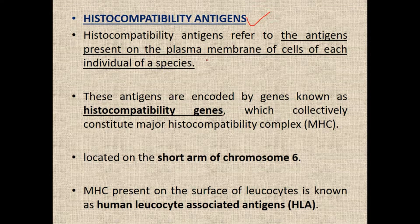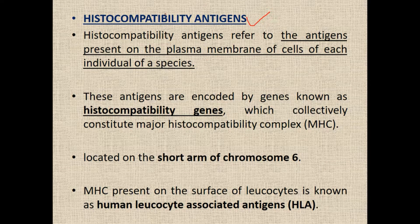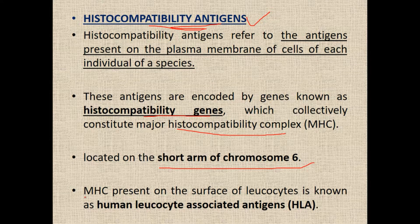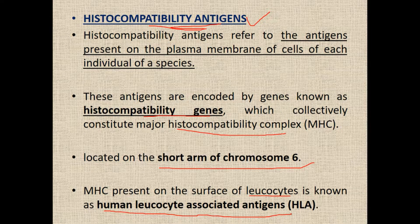Inside every species there are different types of individuals, and in those individuals specific antigens are present on the surface of their cell membrane — these are known as histocompatibility antigens. These antigens are encoded by genes known as histocompatibility genes, which collectively constitute the major histocompatibility complex (MHC), located on the short arm of chromosome number 6. MHC present on the surface of leukocytes is known as human leukocyte associated antigens, or HLA.